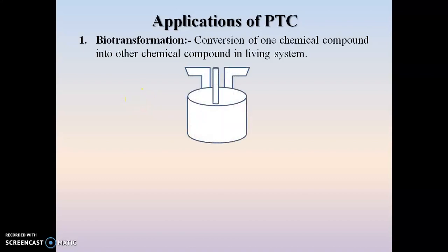For carrying out biotransformation, bioreactors are used which consist of nutrient media and a precursor — that is, the substrate — which are provided. These bioreactors contain cells responsible for the conversion of one chemical compound into another. Plant cells are used for this conversion purpose, and this method is generally used for the production of secondary metabolites as well as other valuable products. The precursor or substrate gets converted by cell enzymes into different products through various reactions, and these products are then isolated.